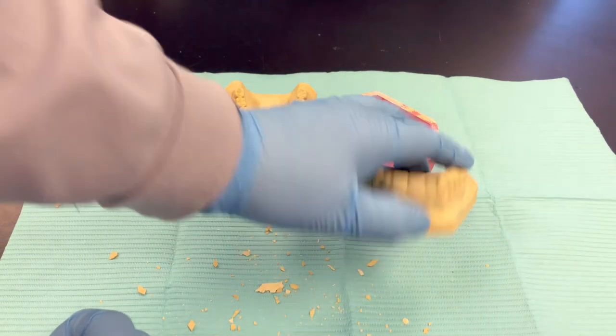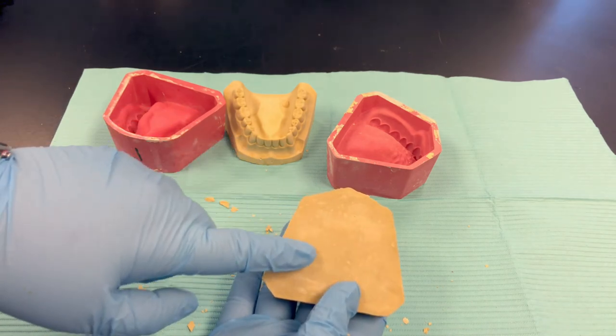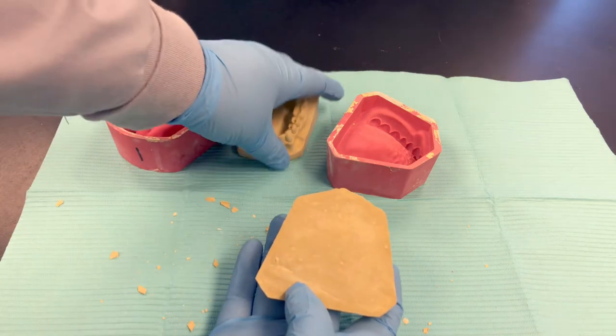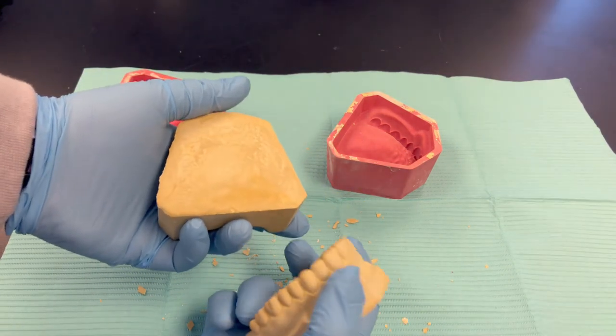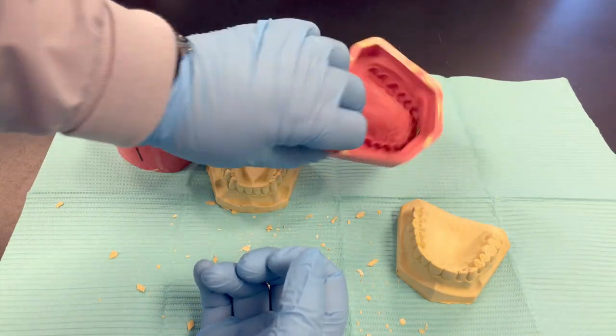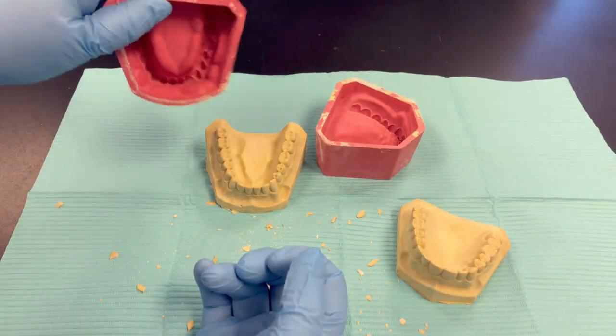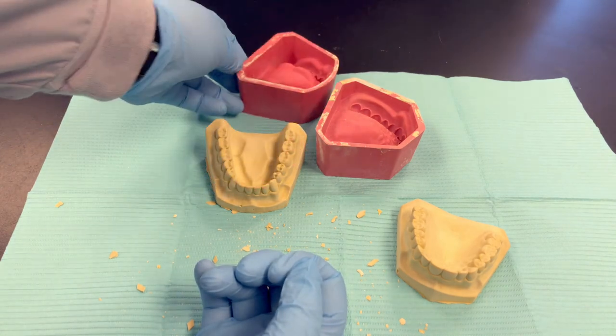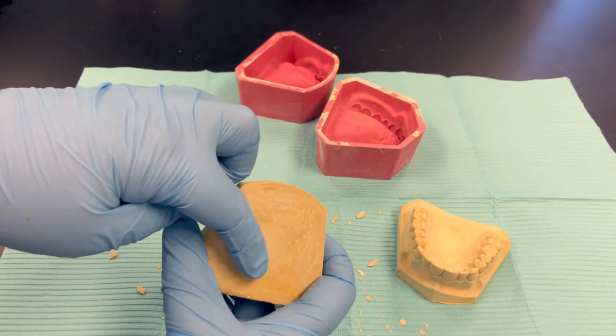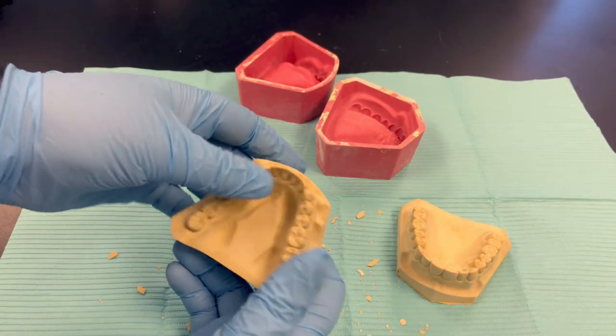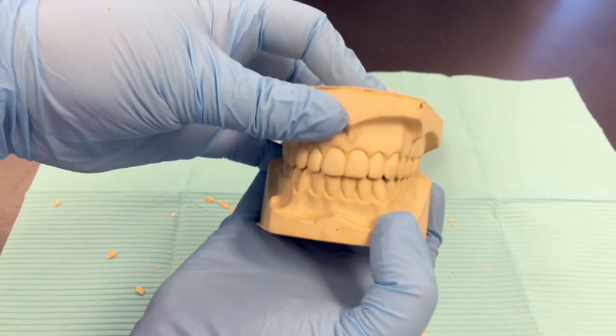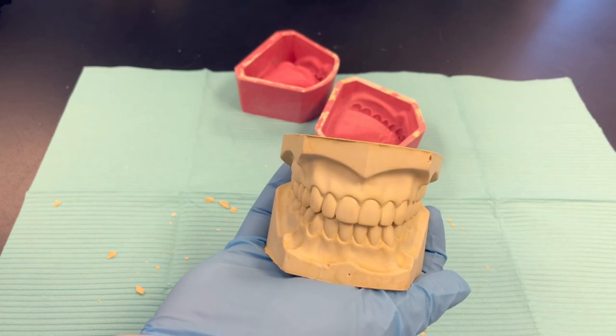With your study models, always write the patient's name and the date of the impression on the study model. That way, in an office with many of these lying around, you know who they belong to. So again, these are just generic rubber molds used to practice our technique. If you're a student pouring this up, put your name on here so your models don't get confused with another student. And here we have a set of stone study models.